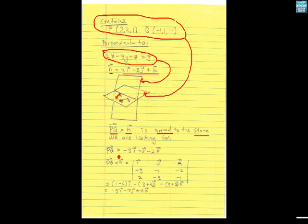So we go through our procedure: head minus tail, and figure out the equation. The vector component form of PQ, and we carry out our cross product - provided I've done that correctly - that's negative 5i minus 7j plus 11k.